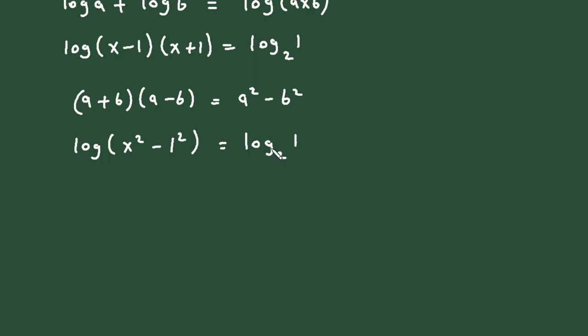Now for this there is one more formula: log a to the base b is equal to log a upon log b. So this will be log(x² - 1²) will remain as it is, is equal to, this term will become log 1 divided by log 2.